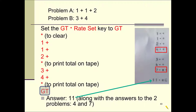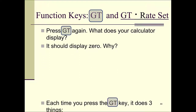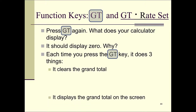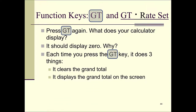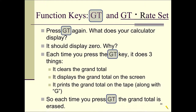Go ahead and press the GT key again. Your calculator should display zero. Why? Each time you press the GT key, your calculator does three things: it clears the grand total, displays the grand total on the screen, and prints the grand total on the tape along with the letter G meaning grand total. So each time you press GT, the grand total is erased.